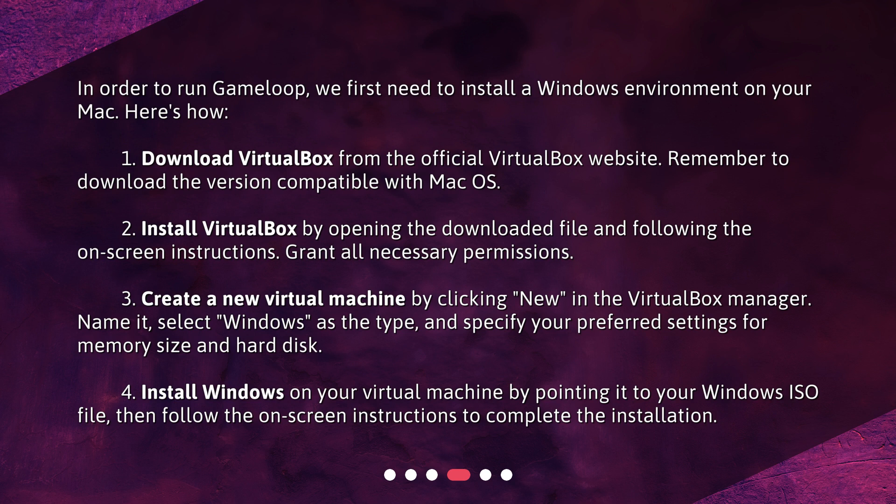Step 3: Create a new virtual machine by clicking New in the VirtualBox manager. Name it, select Windows as the type, and specify your preferred settings for memory size and hard disk. Step 4: Install Windows on your virtual machine by pointing it to your Windows ISO file, then follow the on-screen instructions to complete the installation.